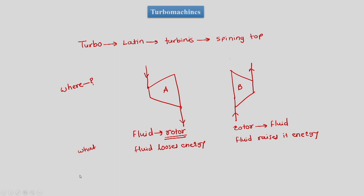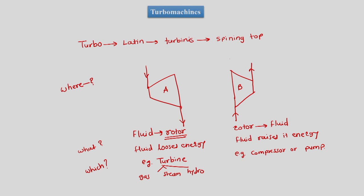Which components deal with this energy interaction? System A, where fluid loses its energy by giving it to the rotor, is exemplified by a turbine — which can be a gas turbine, steam turbine, or hydro turbine. System B, where fluid takes energy from the rotor, is exemplified by a compressor or pump. These are the two basic distinctions between turbo machines: a turbo machine will either take energy from the fluid or give energy to the fluid.